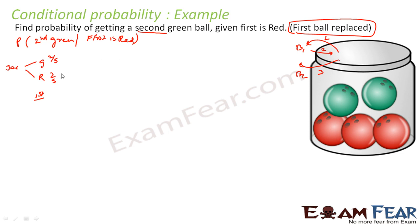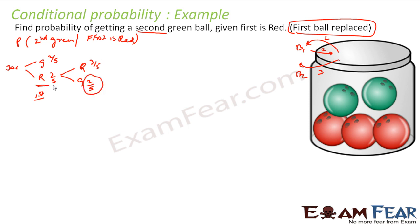Given that the first is red, I now take out the second ball. The second ball can also be red or green. Since the first ball was replaced, the second ball probabilities are: red 3 by 5, green 2 by 5 — because we are taking out the ball from the same jar. The probability doesn't change. So the probability of getting a second green ball given the first is red is 2 by 5.